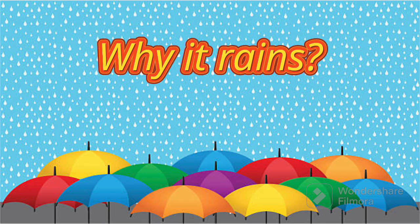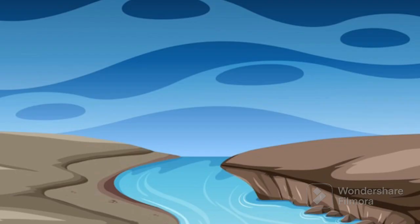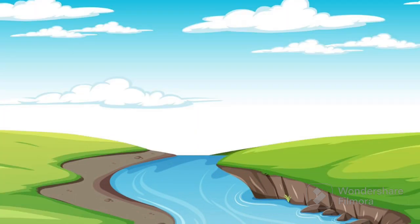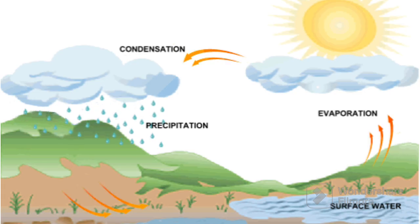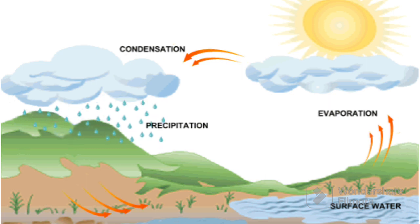Now let's see why it rains. Rain happens because water from the ground goes up into the sky, turns into clouds and then falls back down as rain. When the cloud gets heavy, it's like the sky is sharing water with the earth.